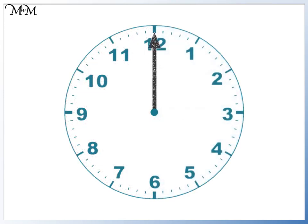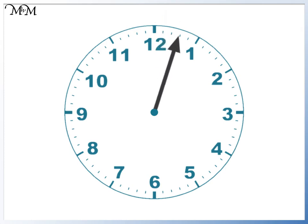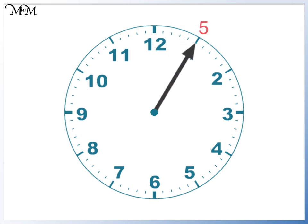This is the minute hand. It tells us how many minutes have passed. It starts at 12, which is 0 minutes. It moves to 1 minute, 2 minutes, 3 minutes, 4 minutes, 5 minutes.